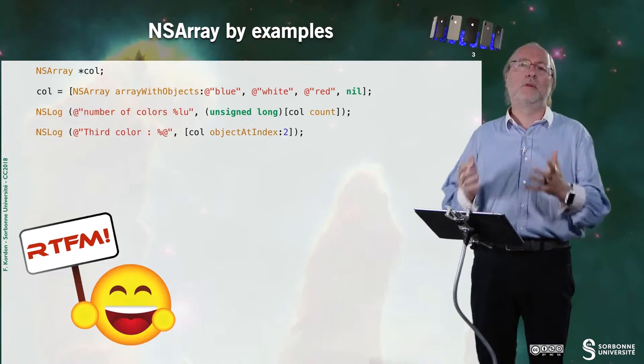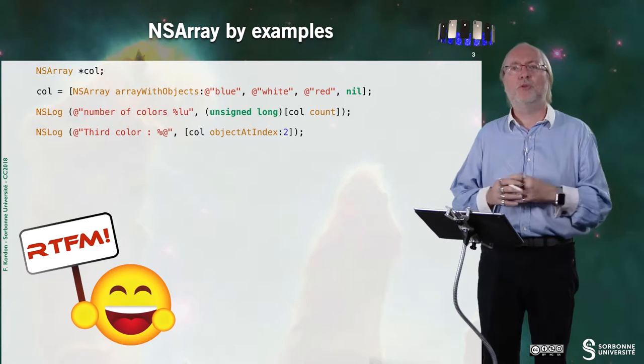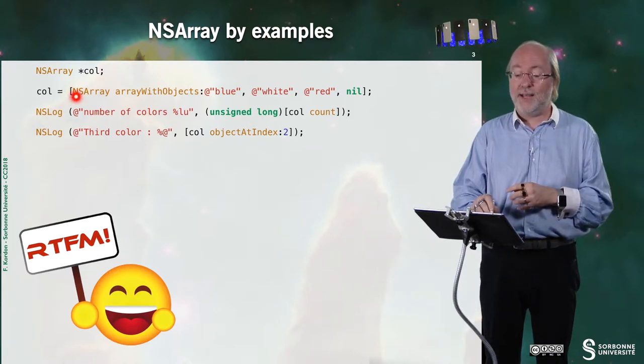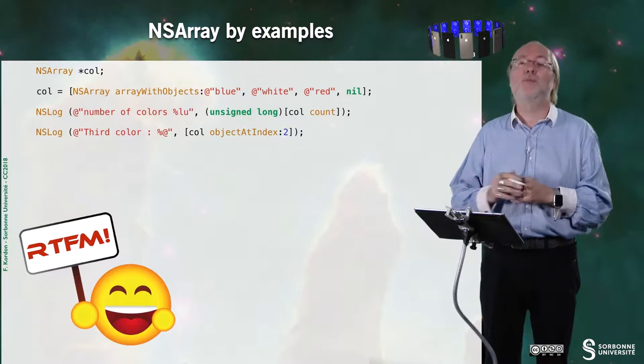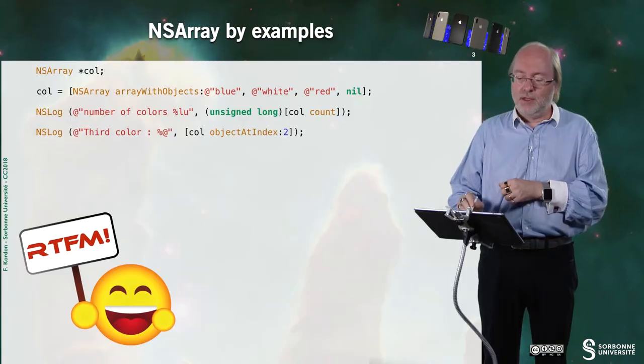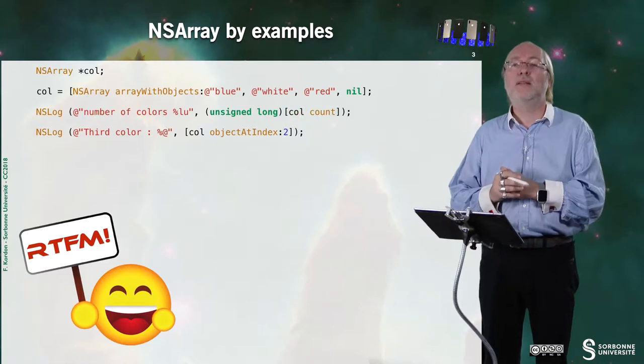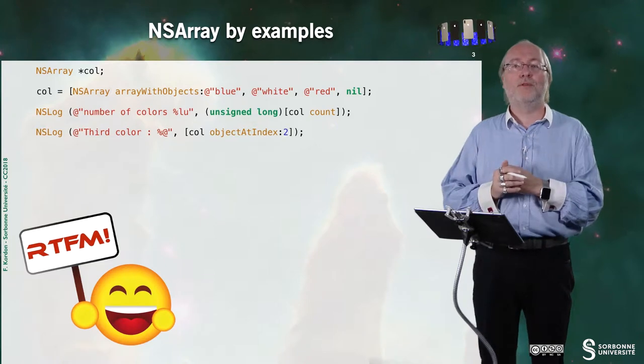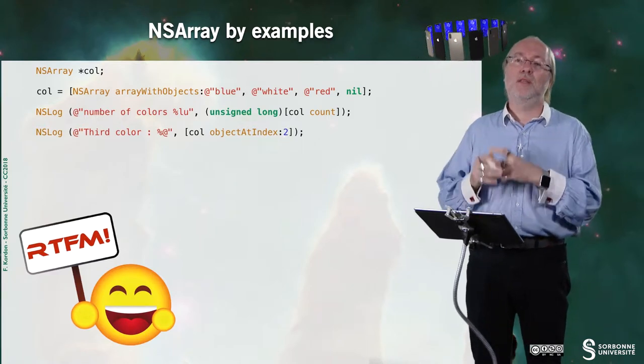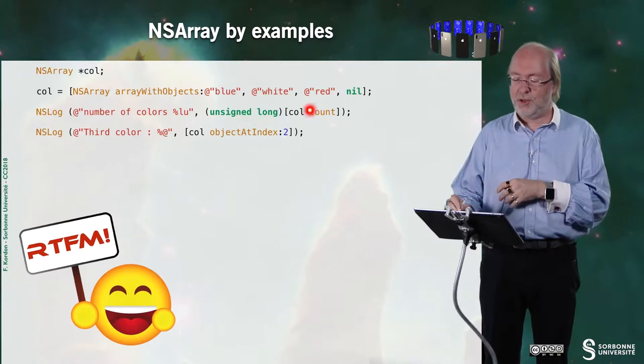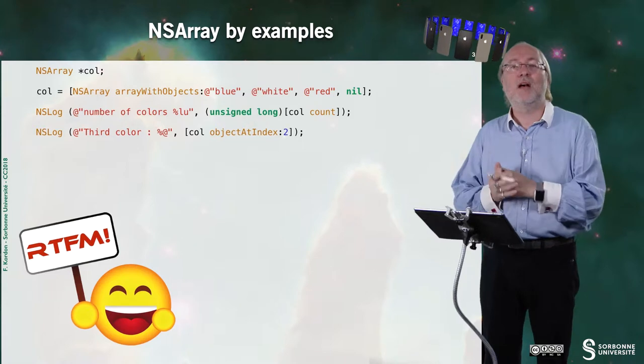Let's have a look at NSArray by means of a few examples. Here you have a first example, where you have a col, which is a reference to NSArray. And here, I say that col, I initialize it with, once again, it's a class method, array with objects, and I put here these three objects. These three objects, I finish by nil, are three colors. In fact, three NSStrings describing colors. Okay? And here, I can query the col object with the method count, that will provide me with a number of colors.